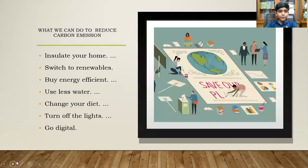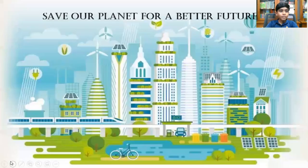What we can do to reduce carbon emissions: insulate your home, switch to renewables, buy energy-efficient products, use less water, change your diet, turn off the lights, and go digital. Save our planet for a better future. Thank you.